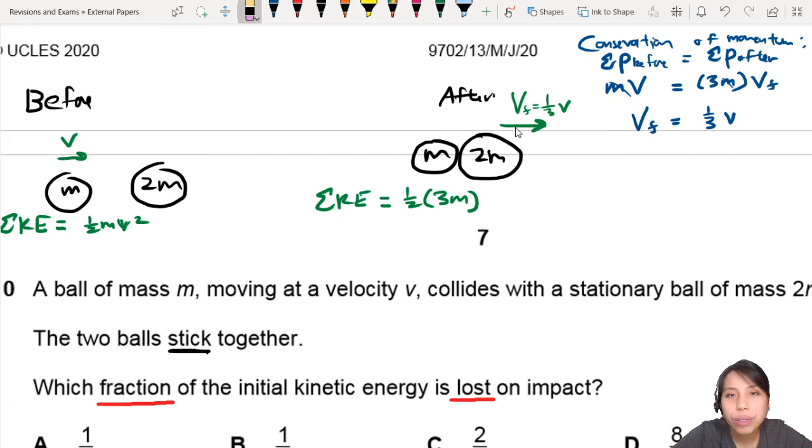1 over 3V squared. Half MV squared. So the final momentum here will be, let me just use a calculator. Half times 3 times 1 over 3 squared. That is 1 over 6 MV squared.